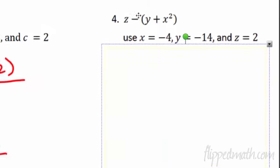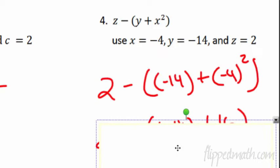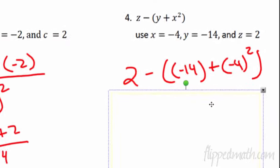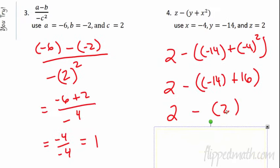Number 4: we have Z minus the quantity Y plus X squared. I plug everything in: 2 minus the quantity negative 14 plus negative 4 squared. Squaring negative 4 becomes positive 16 because negative 4 times negative 4 is 16. Inside the grouping symbols: negative 14 plus 16 gives 2. So I get 2 minus 2, which equals 0.